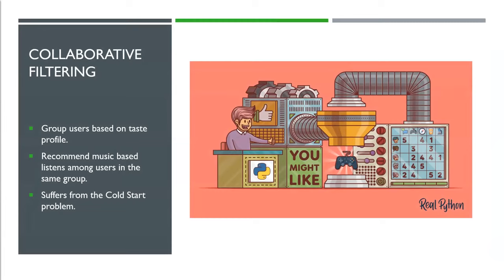Most modern music recommendation systems make use of collaborative filtering methods to recommend music. These methods involve grouping users based on their taste profile and then recommending music to users based on listens from other users in the same group. These methods heavily favor popular songs by well-known artists as a song must be listened to by at least one member of the group before it can be recommended. This is an issue commonly referred to as the cold start problem and is inherent in most collaborative filtering music recommendation systems.